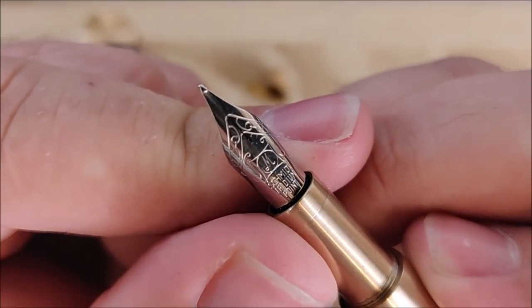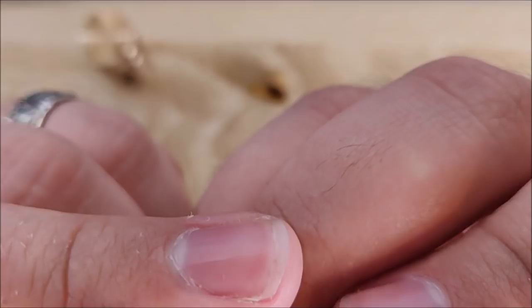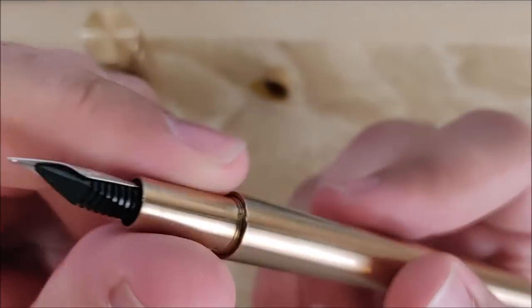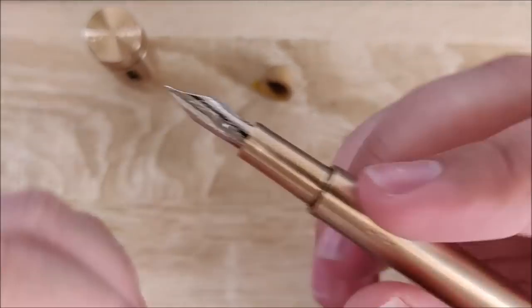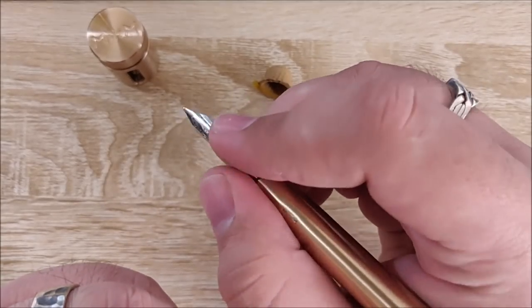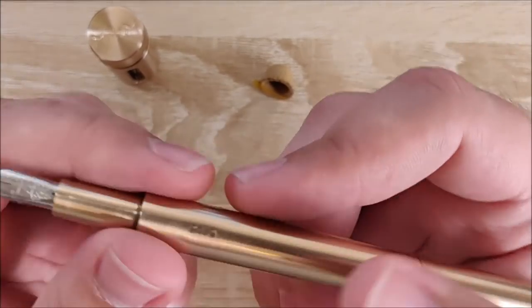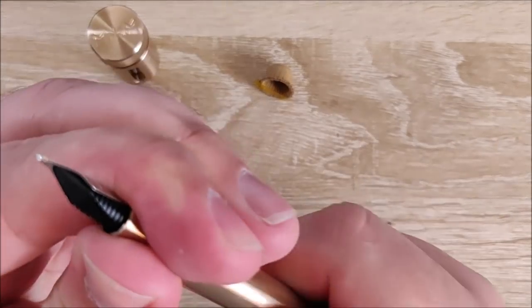This is a Schmidt nib. Haven't had a whole lot of experience with those. I'm pretty excited for that. This is a medium, as you can see there. The section is a little small. But to be honest, it's not much different than the Lilliput. And I'll bring that pen out here in just a second to compare.